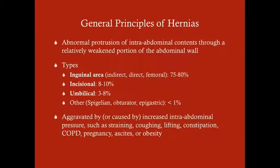So general principles of hernias: these are abnormal protrusions of intra-abdominal contents through a relatively weakened portion of the abdominal wall. This can be acquired or congenital. In the cases where it's congenital, there is really no reason why the patient gets it — like for instance, an umbilical hernia. There's nothing that the child did to get an umbilical hernia. With acquired hernias, there are things that caused breakdown of the tissue that allows the abdominal contents to protrude into another cavity.